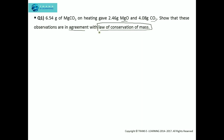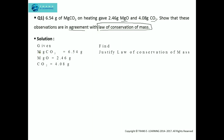So let's start the first step. The foremost step is to analyze what is given and what needs to be found. What is given? Magnesium carbonate which is 6.54 grams, magnesium oxide which is 2.46 grams, and carbon dioxide which is 4.08 grams.